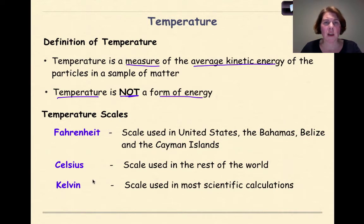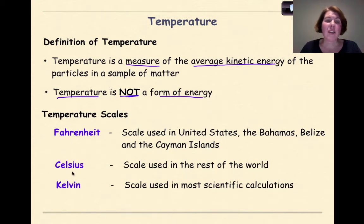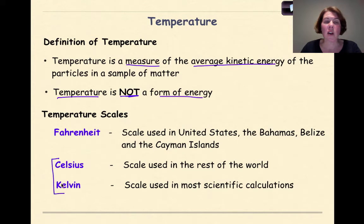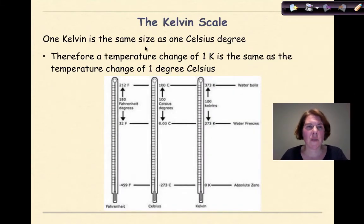There are three different temperature scales. The Fahrenheit scale is used in the United States, the Bahamas, Belize, and the Cayman Islands. The Celsius scale is used by the rest of the world. The Kelvin scale is used in most scientific calculations. We are going to be working primarily with Celsius and Kelvin — we will not be working with Fahrenheit.